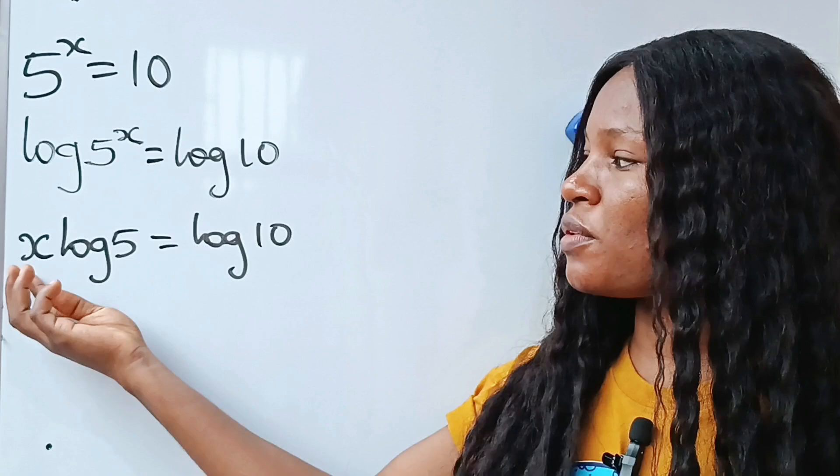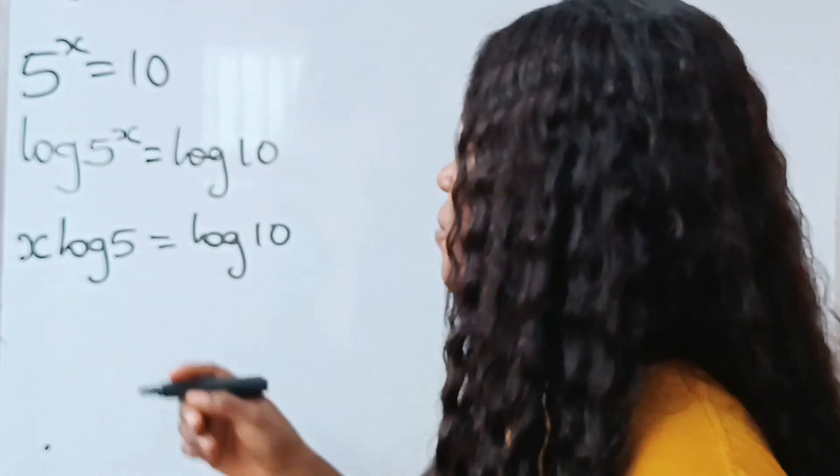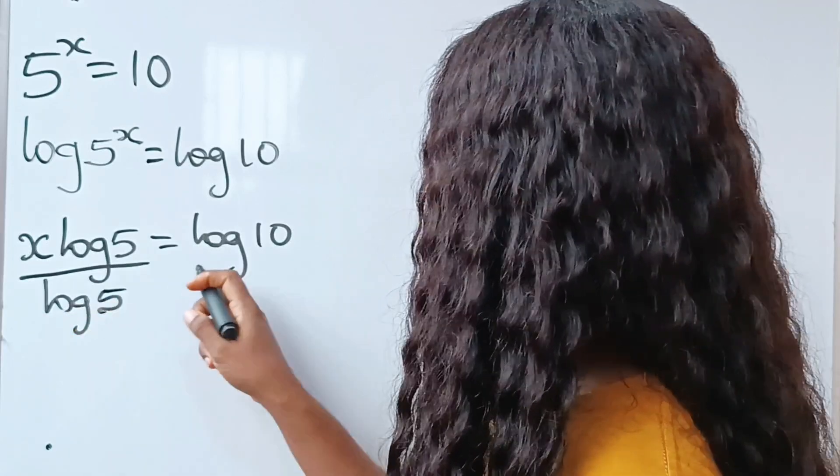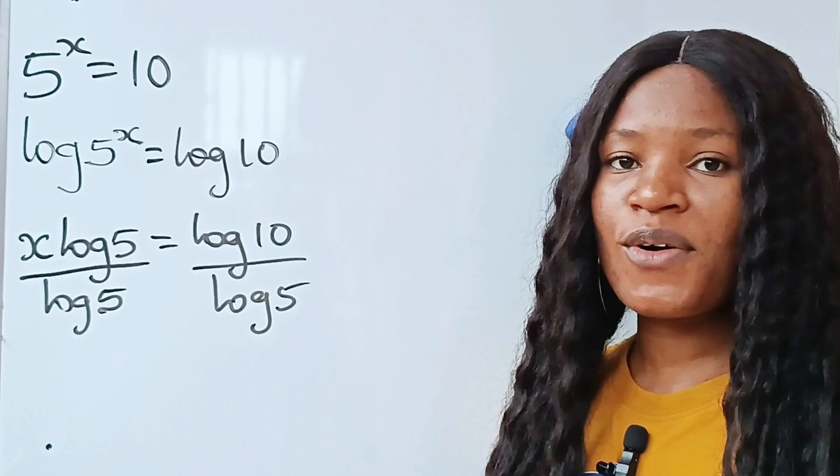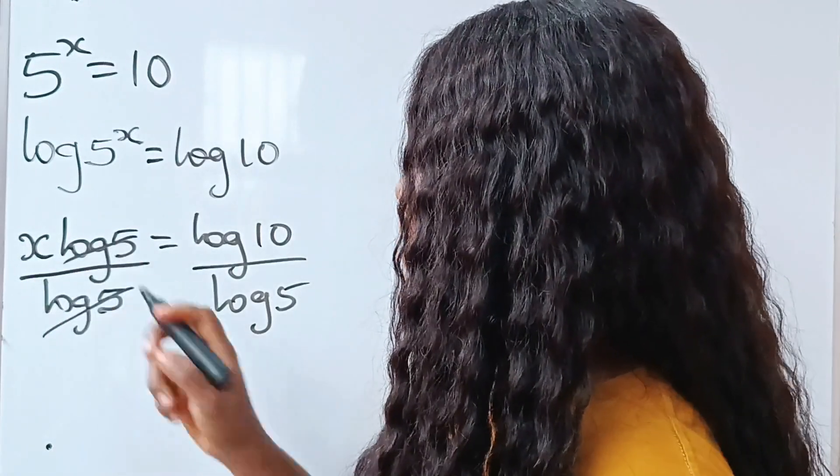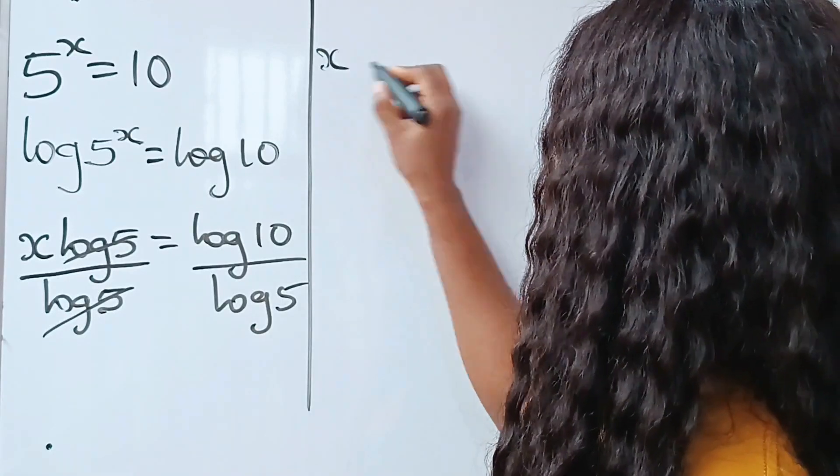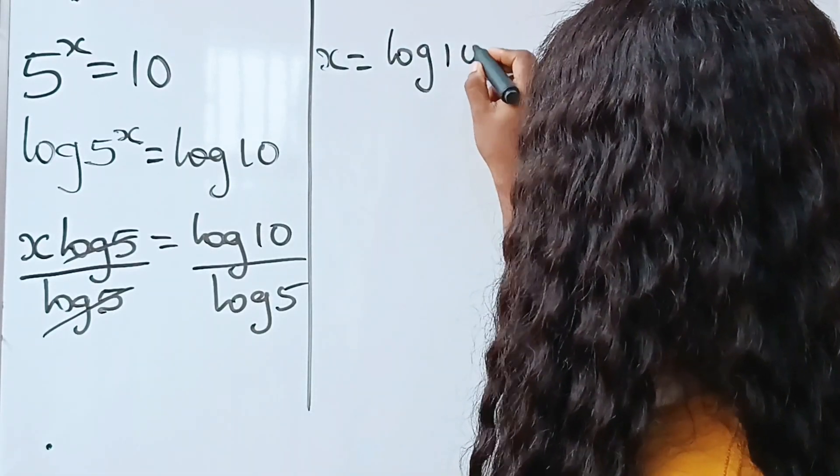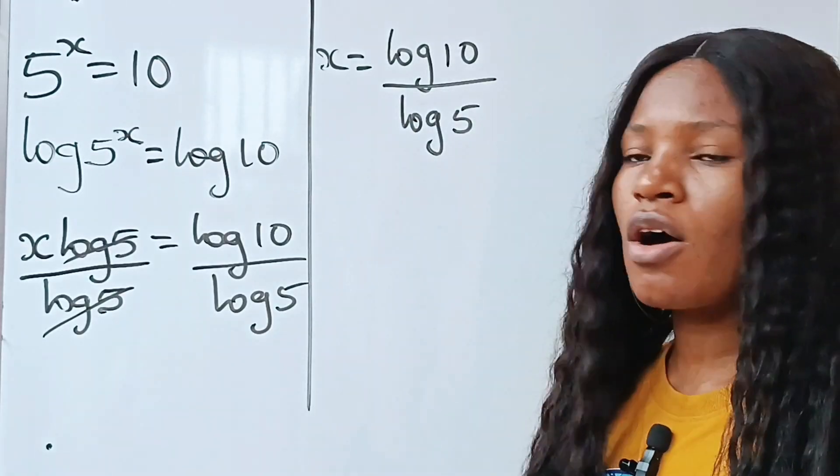Now, since we are looking for the value of x, let's divide through by log 5. Divide that by log 5 divided by log 5. Now, log 5 divides log 5 and we have that x is equal to log 10 divided by log 5.